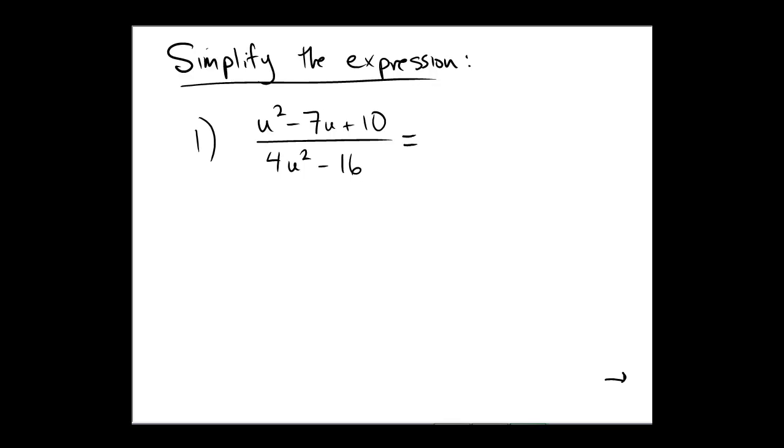In the numerator, we have the expression u squared minus 7u plus 10 and then in the denominator, we have 4u squared minus 16. As an initial factoring step, what's the first step when we try to factor some kind of polynomial? We should always pull out the GCF, the greatest common factor.